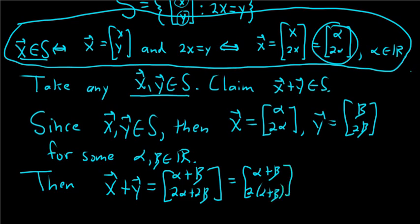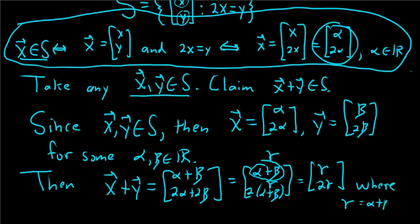And now it meets the form, right? It's [alpha, 2alpha]. You can think of this as like gamma or something, right? So it's [gamma, 2gamma]. You can think of this as [gamma, 2gamma], where gamma is equal to alpha plus beta, which is a real number because the sum of real numbers is a real number. This is precisely what it means for these two vectors to be in S.